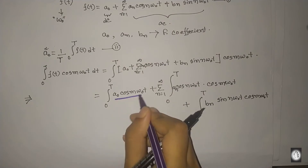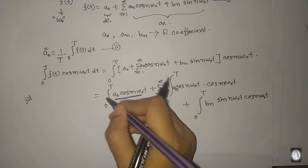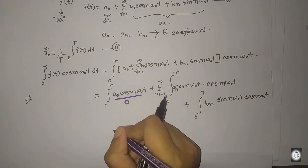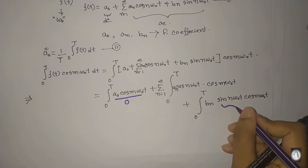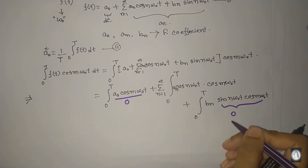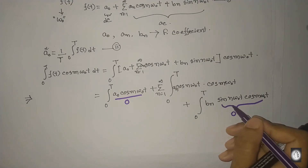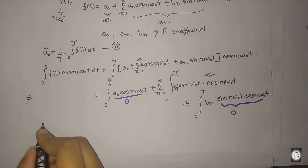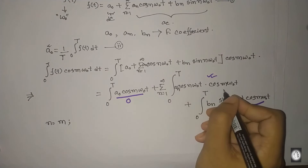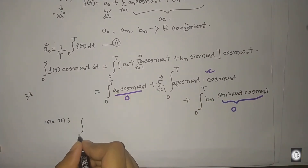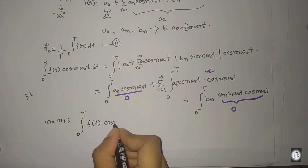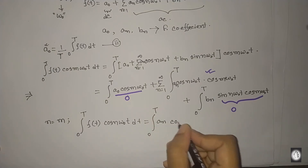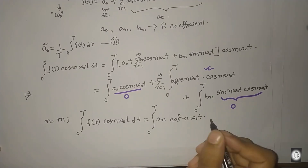The first part becomes zero because we know that integrating sin(θ) or cos(θ) over a full period gives zero. Similarly, the last term — integration of sin(θ)cos(θ) — also becomes zero since they are different functions. Only when n equals m does the middle part survive. So the left side gives us: integral from 0 to T of f(t)cos(nω₀t)dt equals a_n times integral of cos²(nω₀t).